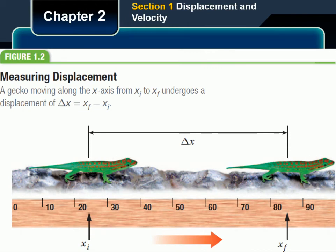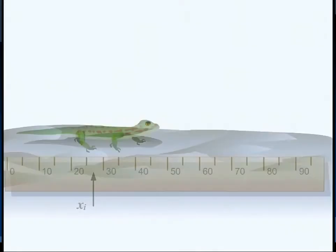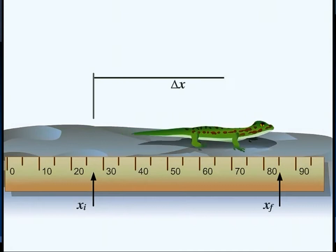For example, when considering the motion of the gecko in figure 1.2 on the screen or on page 39 of your text, it is useful to imagine a stick marked in centimeters placed under the gecko's feet to define the frame of reference. The measuring stick serves as an x-axis. You can use it to identify the gecko's initial position and its final position. A frame of reference is defined to simplify the description of the train's motion, and the motion of the gecko can be described by imagining a meter stick placed under the gecko.